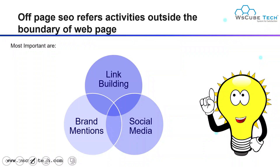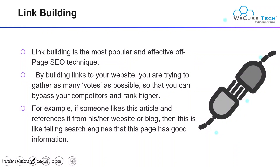The activities which are outside the boundaries of the web page include link building, social media, and brand mentions — the three most important pillars in off-page SEO. Link building is the most popular and effective off-page SEO technique. By building links to your website, you are trying to gather as many votes as possible so that you can bypass your competition and rank higher. If someone likes an article and references it from their website or blog, this is like telling the search engine that this page has good information.